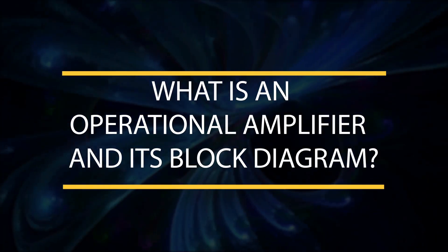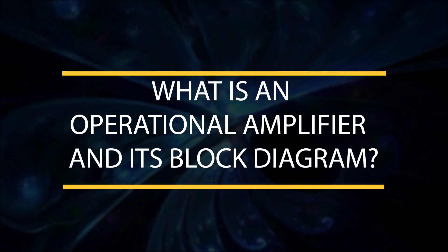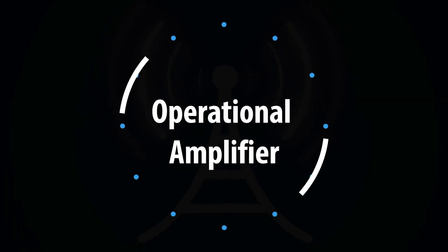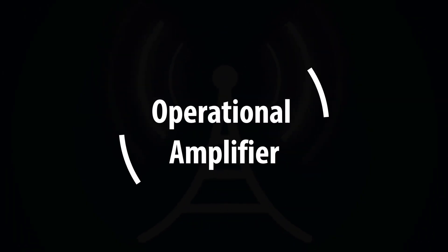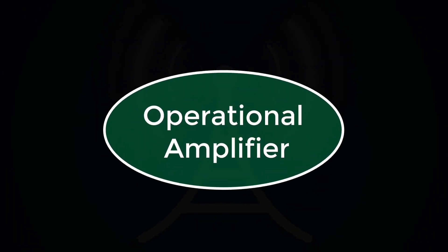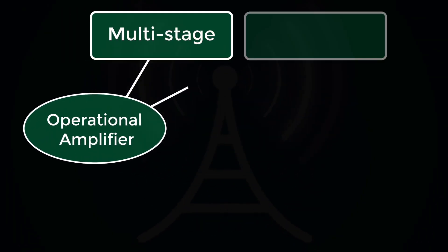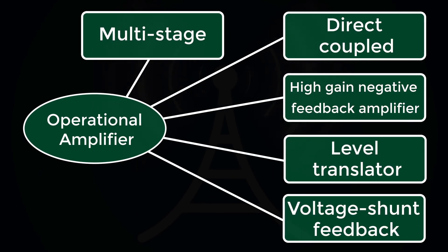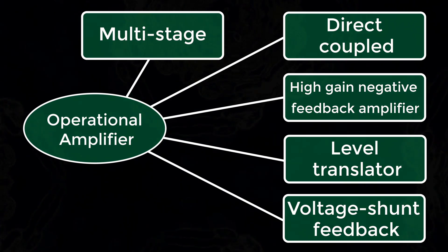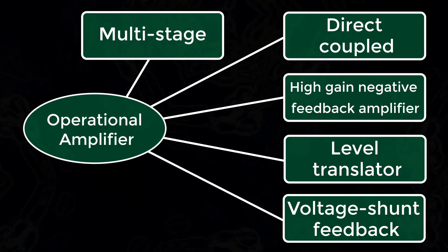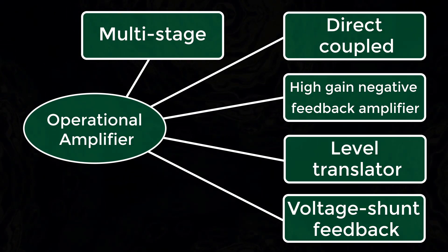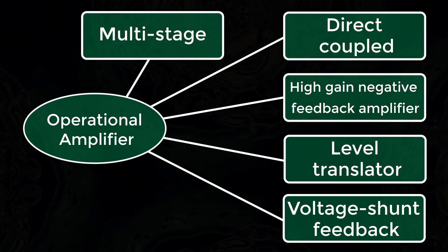An Op Amp is a multistage, direct coupled, high gain, negative feedback amplifier that has one or more differential amplifiers and it is concluded with a level translator and an output stage.